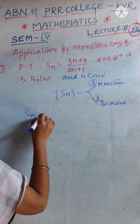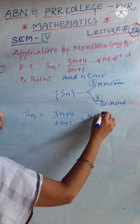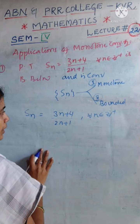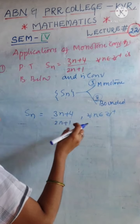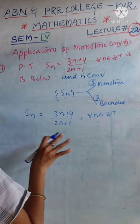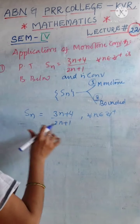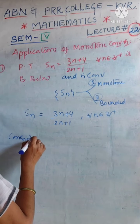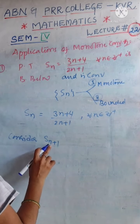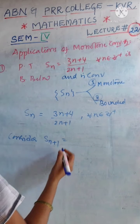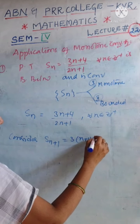The given sequence is Sn = (3n + 4)/(2n + 1). To prove that it is a monotone sequence, we have to check whether it is increasing or decreasing. To do that, consider the next term of the sequence. If the current term is Sn, the next term is Sn+1, obtained by replacing n by n+1 in the given sequence.